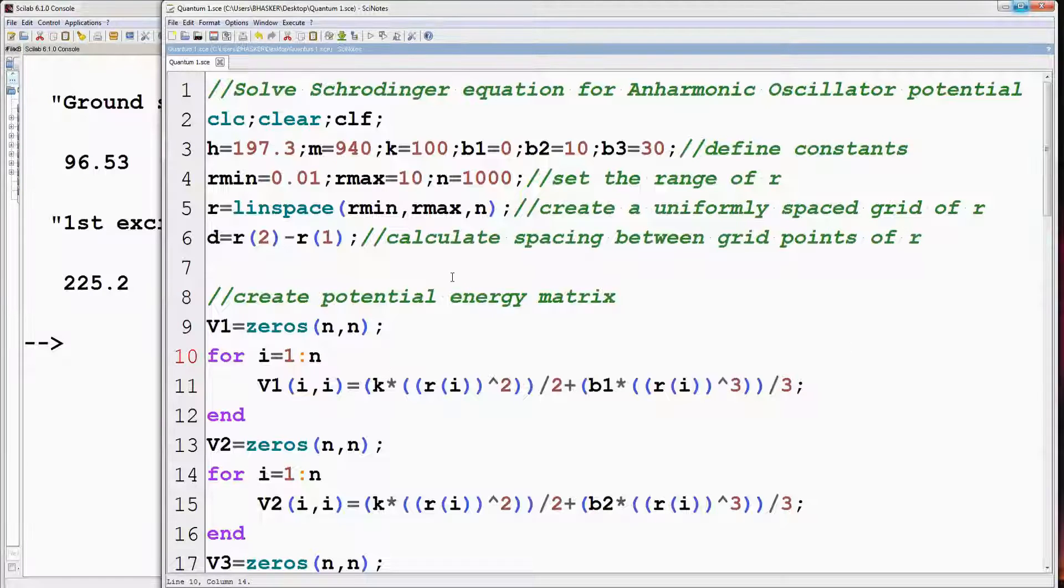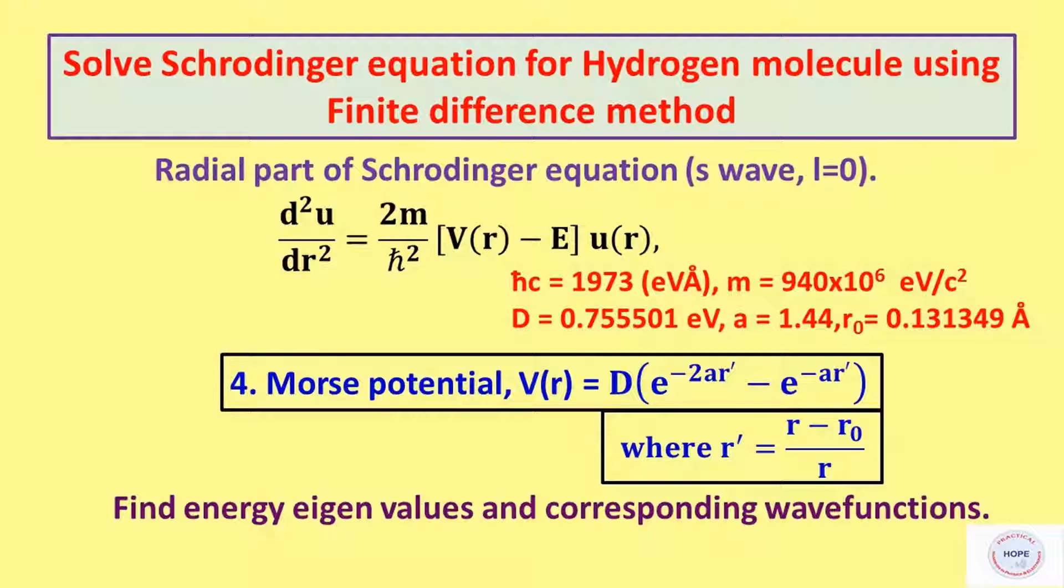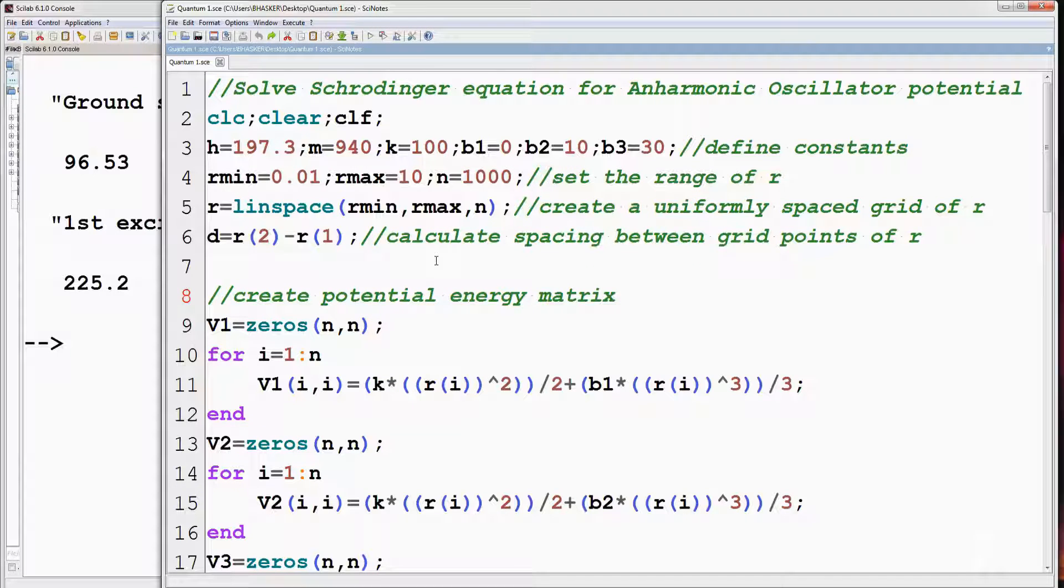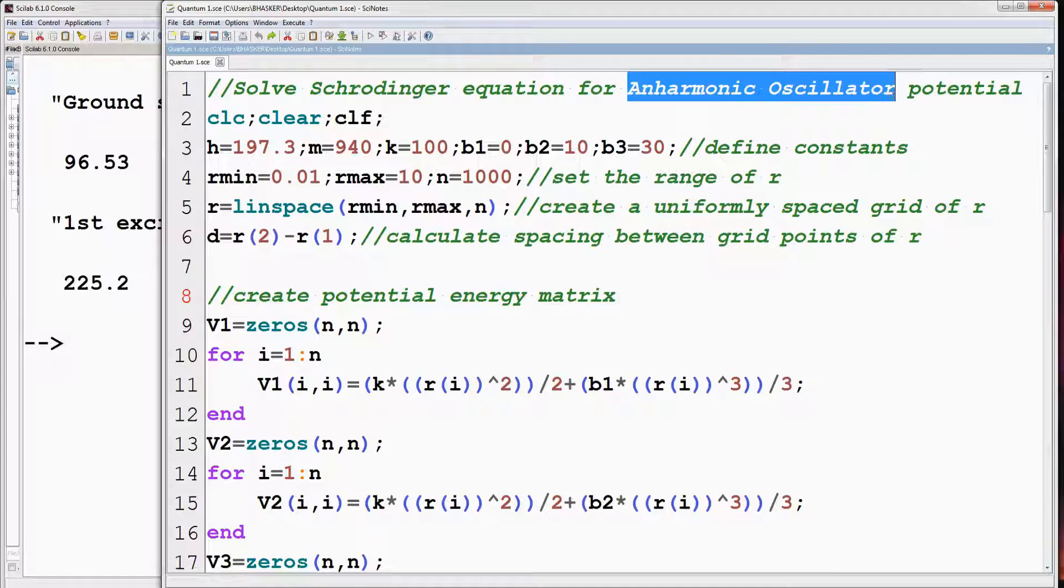So last is the Morse potential. The expression for potential is shown in the figure. Here r is in angstrom and energy in electron volts. Let's implement it now. Change title, then the values of constants.